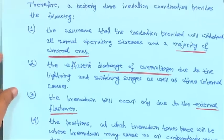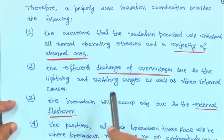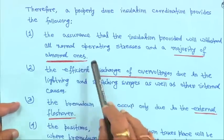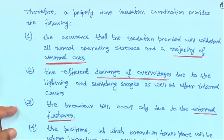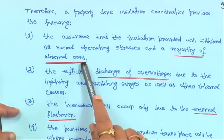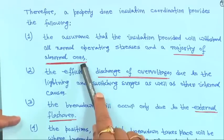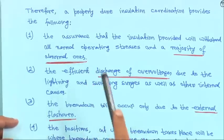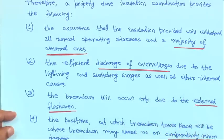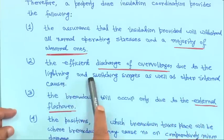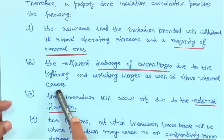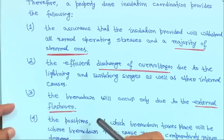A properly done insulation coordination provides: (1) assurance that the insulation will withstand all normal operating stresses and the majority of abnormal ones — whether switching surges, lightning surges, or faults — and (2) efficient discharge of overvoltages due to lightning and switching surges as well as other internal causes.